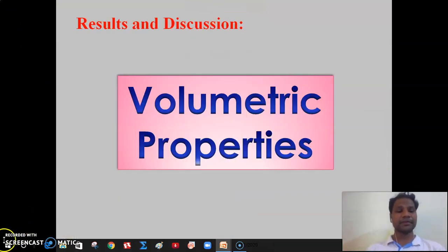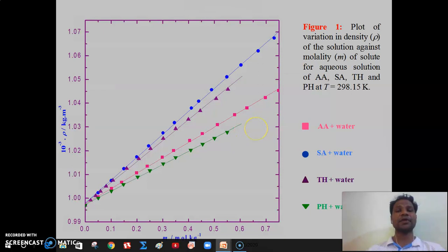Figure 1 shows variation in the density of solution as a function of molality for the studied solute at temperature T equals 298.15K. It can be observed from the figure that density of solution increases linearly with the increase in the concentration of solute. Also it is found that the density value decreases slightly with increase in temperature at a particular concentration for all the studied systems.